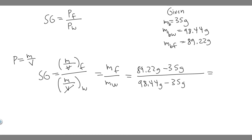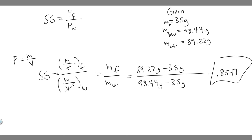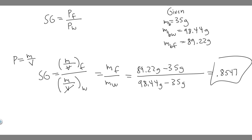So we calculate: (89.22 minus 35) over (98.44 minus 35). When you do this, you get 0.8547. So 0.8547 is the specific gravity of this fluid — just this ratio of our material over water at 4 degrees Celsius. Hopefully you found this useful.